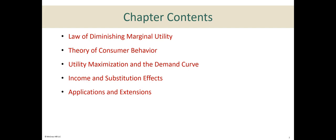We will cover five main topics in this chapter. The first is the law of diminishing marginal utility, which explains why we get less satisfaction as we keep consuming more of something. The second is the theory of consumer behavior — why people make certain choices when they buy things. The third is utility maximization and the demand curve. The fourth is income and substitution effects. And finally, we will briefly talk about applications and extensions, like new products and why diamonds are more expensive than water.